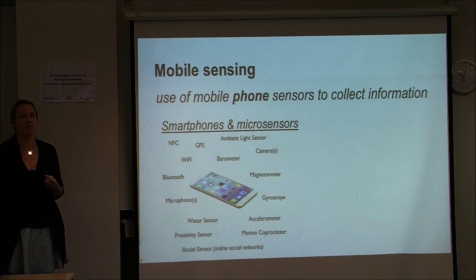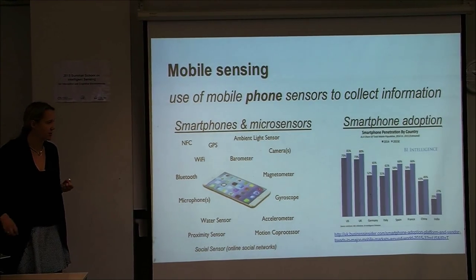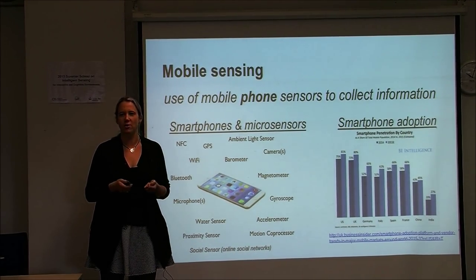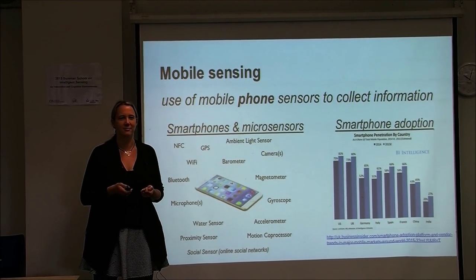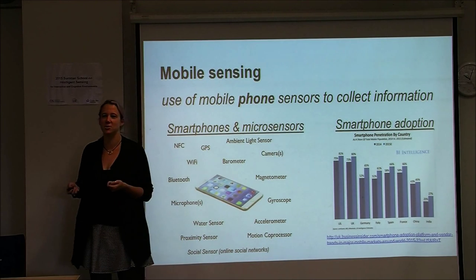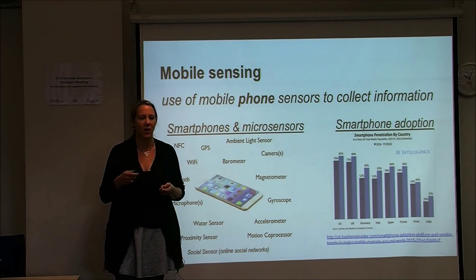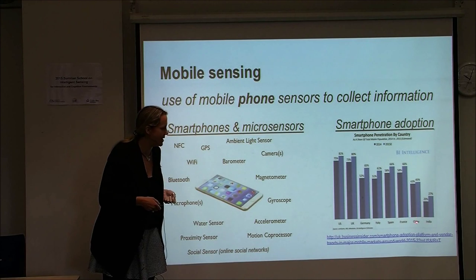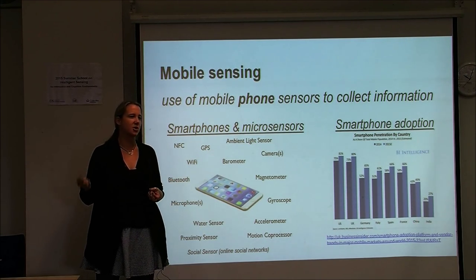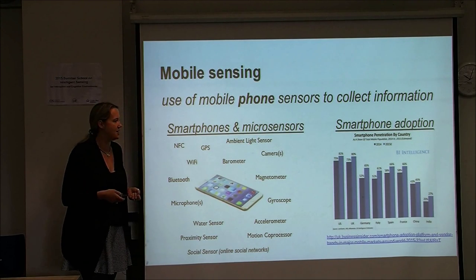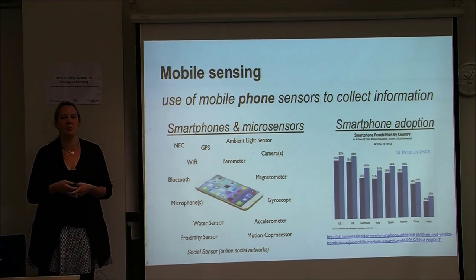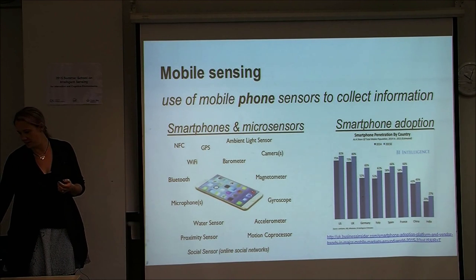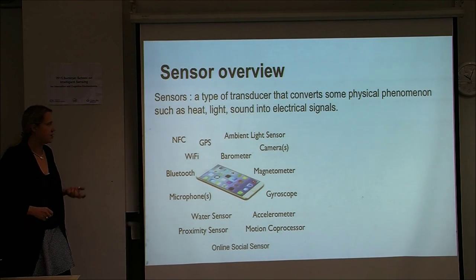Another important factor enabling mobile sensing is smartphone adoption. Virtually everyone in the audience has a smartphone today. In Western countries and increasingly in places like China and India, smartphone penetration is increasing every year. Because so many people carry phones, we can do a lot of sensing we didn't used to be able to do.